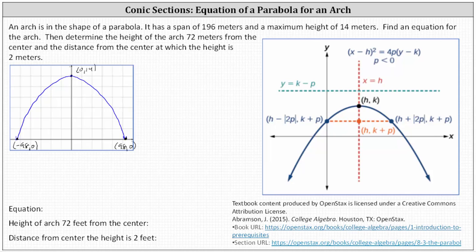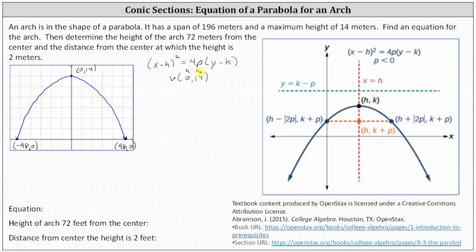The equation is going to be in the form (x − h)² = 4p(y − k). We know the vertex is the point (0, 14), which indicates h is zero and k is 14. Making these substitutions, we have x² = 4p(y − 14). And now to find 4p, we can use one of the x-intercepts and perform substitution.